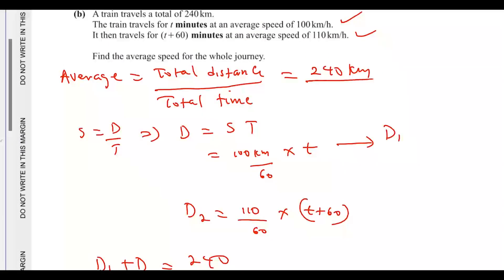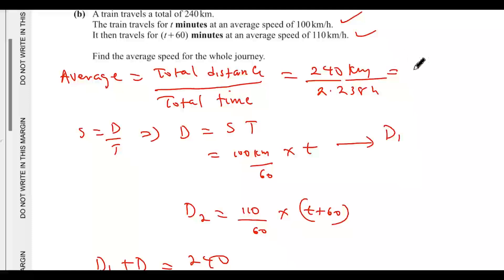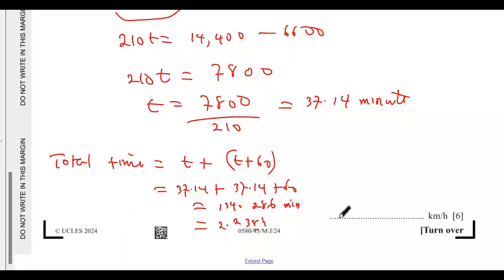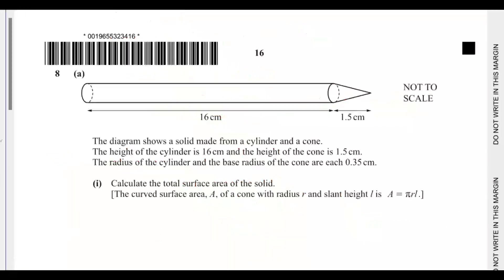The total time taken is 2.238 hours, and dividing 240 by 2.238 gives 107 kilometers per hour. That is the average speed of the whole journey. This is the end of my solution to question seven — in the next video I'll solve question eight, so stay tuned.